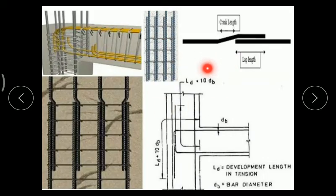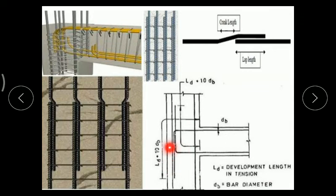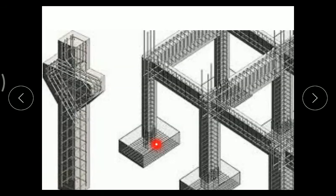If we continue the reinforcement by overlapping, that is known as splicing, and this portion is known as lap length. Due to the anchorage effect — to transfer the load from beam to member — a certain amount of additional embedded length of steel is required, known as development length. This is required at the corner joint of beam-column as well as at the column-foundation junction, where an L-type additional length is provided for proper anchorage and load distribution.